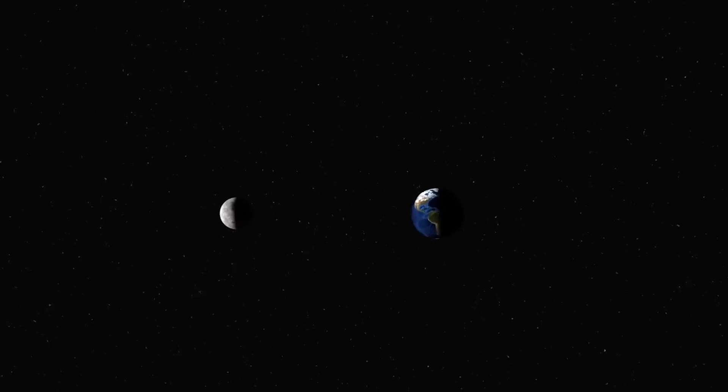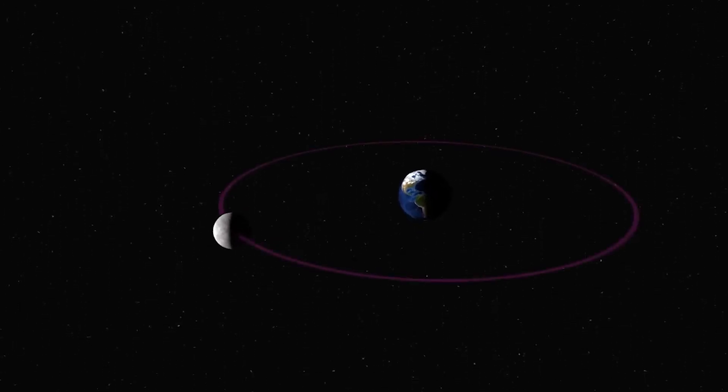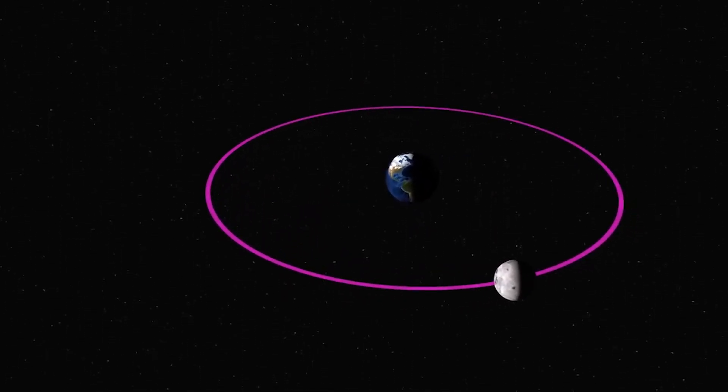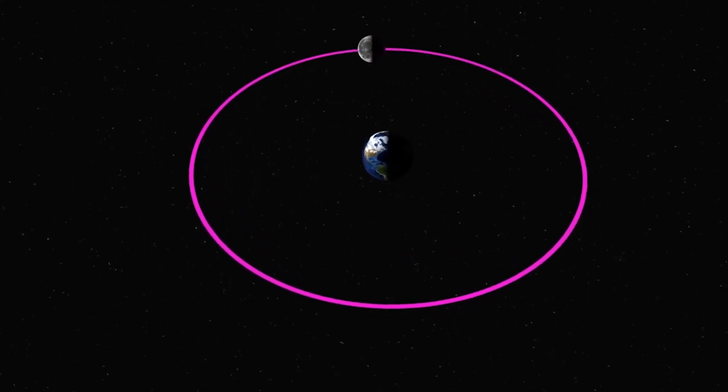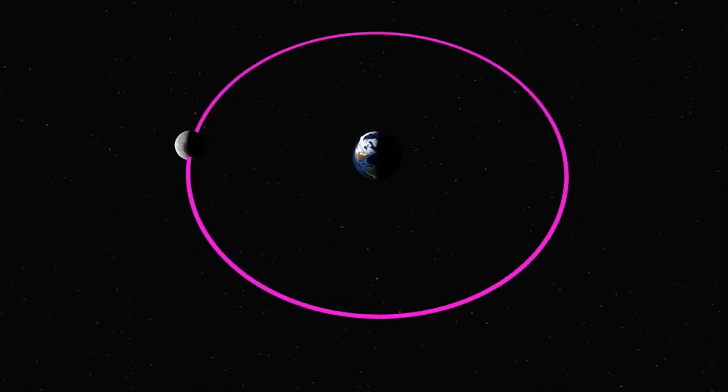But what if our Moon, constant presence in the night sky and inspiration for countless myths and legends, was slowly slipping away? Recent scientific studies have revealed a startling truth. Our Moon is indeed drifting further from Earth with each passing year. This video explores the eye-opening reality of our Moon's gradual retreat and what it could mean for our planet's future.